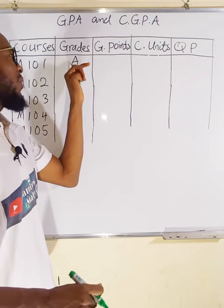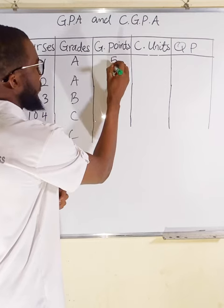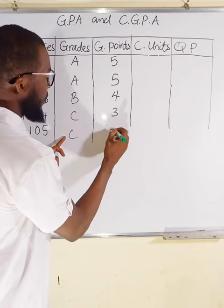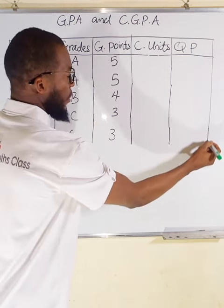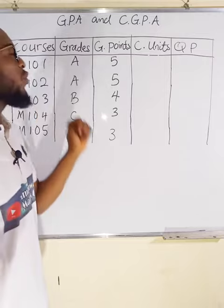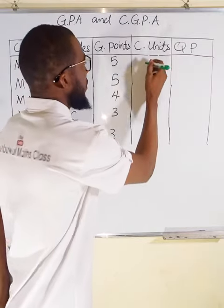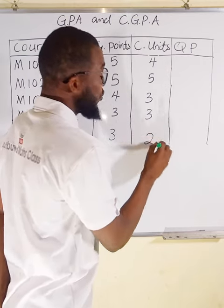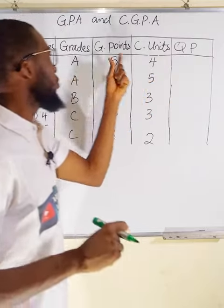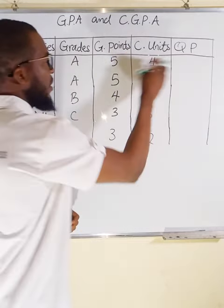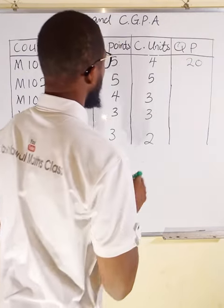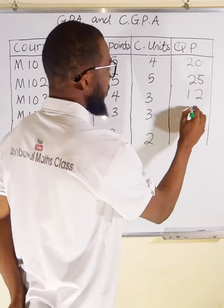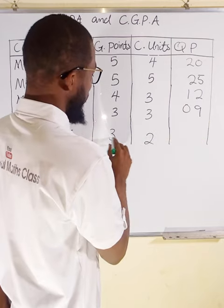The grade point of A is 5, so we write 5, 5, then 4 for B, then 3 and 3 for the two C grades. The credit units are: 4 units, 5 units, 3 units, 3 units, and 2 units. Quality point is the product of grade points and credit units: 5×4=20, 5×5=25, 4×3=12, 3×3=09, and 3×2=6.